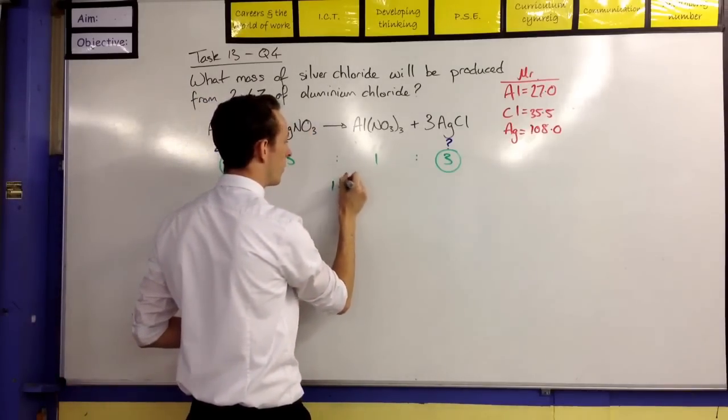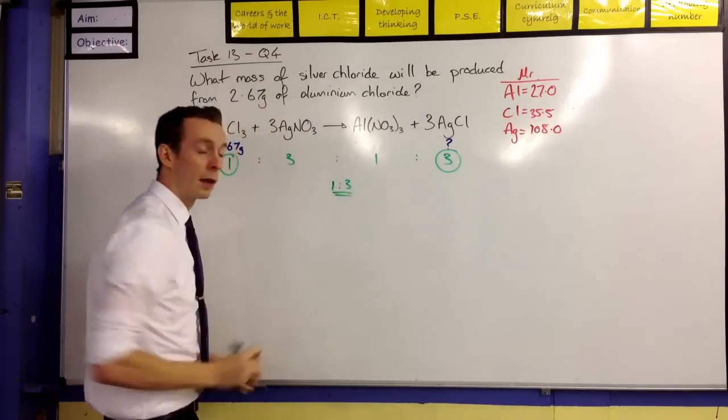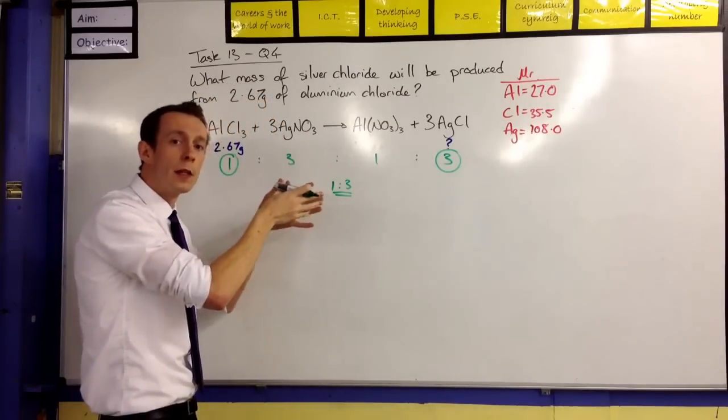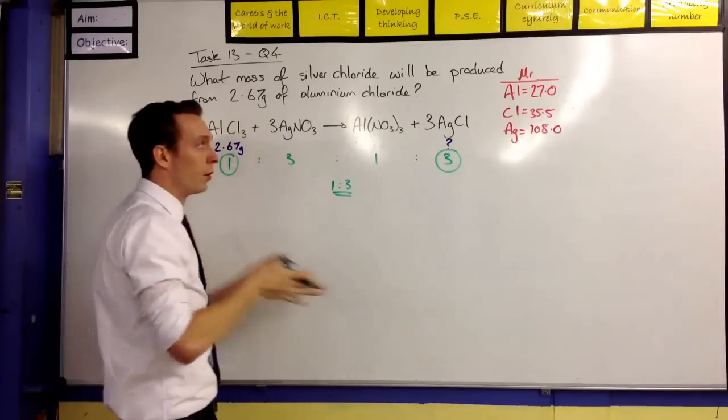Now, that molar ratio, one to three, is really important. We'll come back to that in a little bit to find out why. We're basically going to use that information to bridge across from what we know to what we're trying to find out.